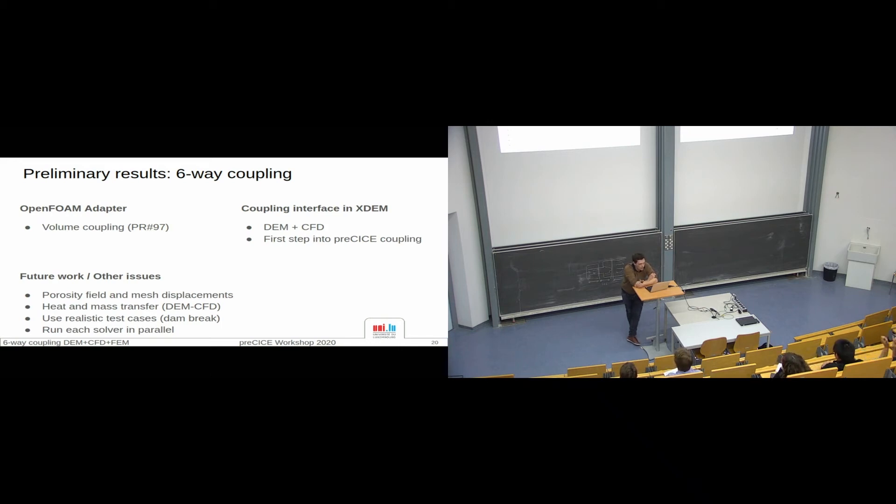As future work or next steps, we want to add the properties of porosity and mesh displacement and fix this problem. We want to add heat and mass transfer for DEM and CFD, use realistic test cases now that we're sure everything works fine, and run each solver in parallel, because everything is done in sequential.